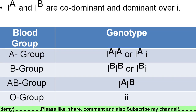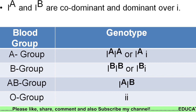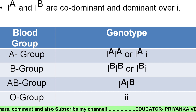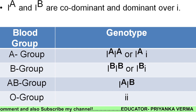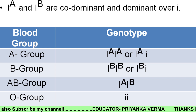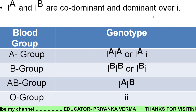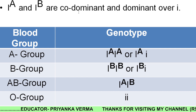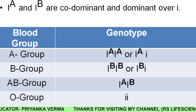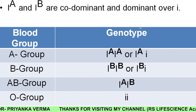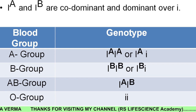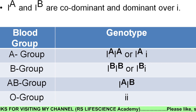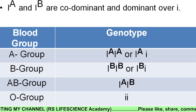The co-dominance example is Iᴬ and Iᴮ — these are both dominant. When both are present together in someone's genotype, we get blood group AB. Iᴬ and Iᴮ are both dominant over small i. Small i is recessive and remains dominated by either Iᴬ or Iᴮ. It is always present in a pair in the body.